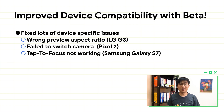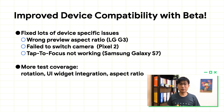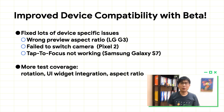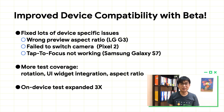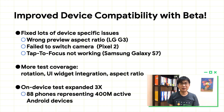We have learned that our test cases are not enough for some scenarios, so we have added more test cases for new scenarios that could potentially cause issues. For example, we have enhanced our rotation, UI widget integration, and aspirational tests. We are happy to announce that the capacity of our KMAS test lab has grown to three times the size compared to last year. We now have 88 devices representing 400 million active Android devices running in our lab, and we will keep adding more in the future.